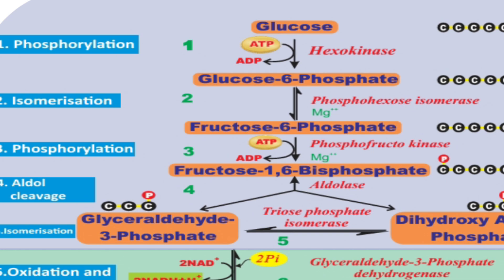In the second step, isomerization occurs. Glucose 6-phosphate is converted to fructose 6-phosphate. Isomerism means the compounds share the same structural formula but have different properties. This is a reversible reaction and the enzyme involved is phosphoglucose isomerase.